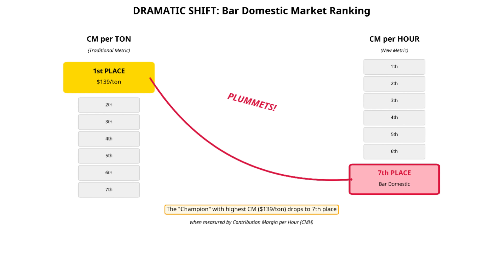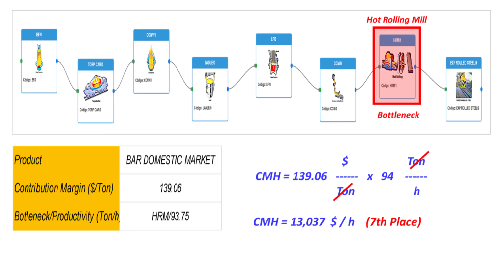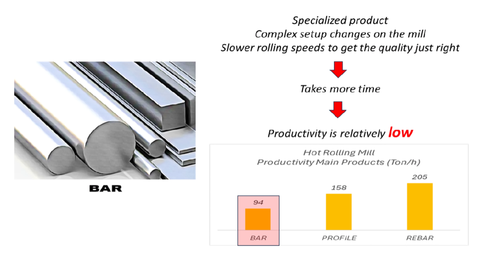When you look at CMH, it plummets all the way down to seventh place. It likely comes down to the hot rolling mill, the HRM — that's often a bottleneck. Bar Domestic is probably a more specialized product; maybe it needs complex setup changes on the mill or slower rolling speeds to get the quality just right. Its productivity is relatively low: only about 94 tons per hour pass through the HRM. It hogs the machine's time to make that $139. High margin per ton, but low throughput in tons per hour.